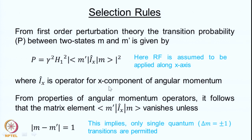To calculate this, one has to go into the theory of angular momentum operators; we will not go into those details. The result says that this matrix element of the operator Ix between states M dash and M vanishes unless the difference between M and M dash is equal to 1. M are the azimuthal quantum numbers of spin i, taking values from minus i to plus i — that is 2i plus 1 values. For i equal to half, we have M equal to plus half and minus half, the two possible states. So this implies only single quantum transitions with delta M equal to plus or minus 1 are permitted.